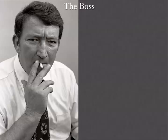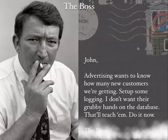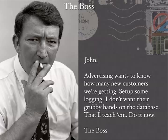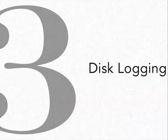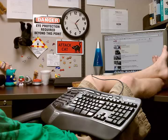The boss hears about your success and of course drops more responsibility on you. He says: 'John, advertising wants to know how many new customers we're getting. Set up some logging — I don't want their grubby hands on the database. Do it now. Signed, the boss.' So when a new customer is created we're going to log this to disk. We set up a basic log file encapsulated with an object called DiskLogger — it takes the path to the log file as a constructor argument and has a log method which just adds a new line to that log file.